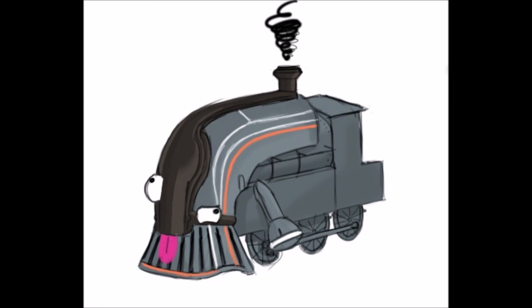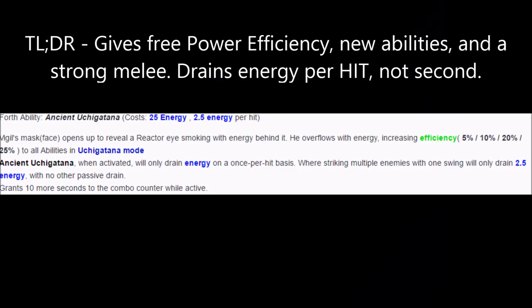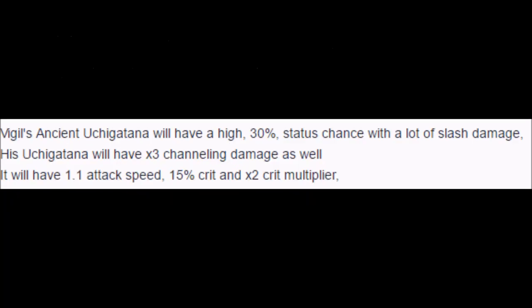Vigil's fourth ability is Ancient Uchigatana, which upon activation, gives Vigil 25% additional power efficiency to all of his abilities, in addition to giving him access to his Uchigatana melee weapon. When Ancient Uchigatana is active, Vigil loses 2.5 energy for every strike with his Uchigatana, rather than a normal energy drain like Exalted Blade.